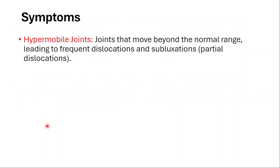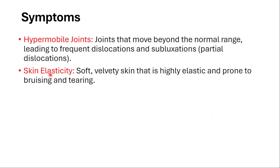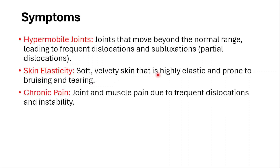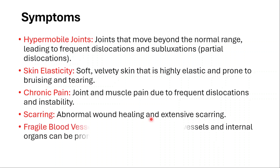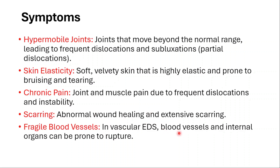The common symptoms are hypermobile joints — joints that move beyond the normal range — leading to frequent dislocations and subluxations, which are partial dislocations. Skin elasticity: soft, velvety skin that is highly elastic and prone to bruising and tearing. Chronic pain: joint and muscle pain due to frequent dislocations and instability. Scarring: abnormal wound healing and extensive scarring. And fragile blood vessels — in the vascular type, blood vessels and internal organs can be prone to rupture.